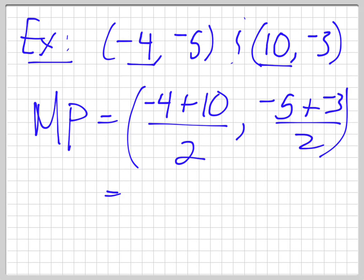So negative 4 plus 10 is 6, 6 divided by 2 is 3. Negative 5 plus negative 3 is negative 8, divided by 2 is negative 4. So 3, negative 4 is exactly between these two points.